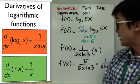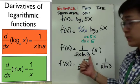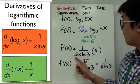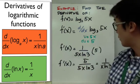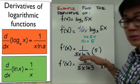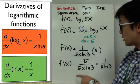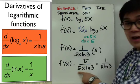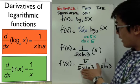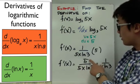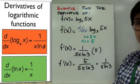Going back to our derivative, f prime of x is 1 over x·ln(a), so we have 1 over 5x·ln(3) times the derivative of u, which is 5. This gives us 5 over 5x·ln(3). We can cancel the 5s, simplifying further to 1 over x·ln(3).